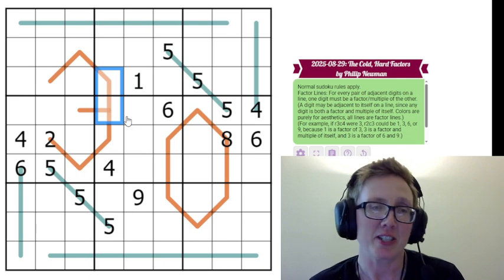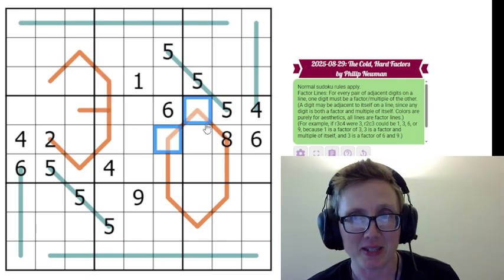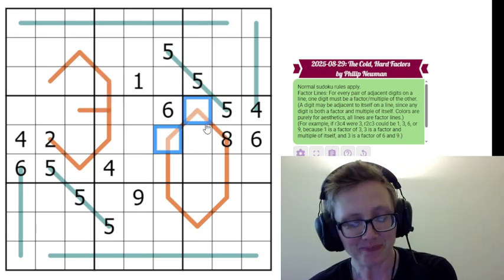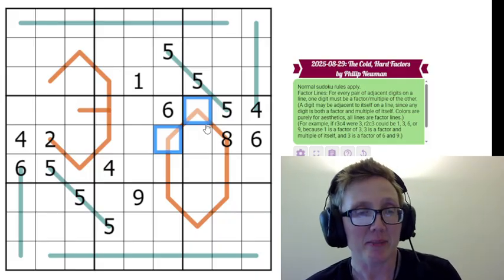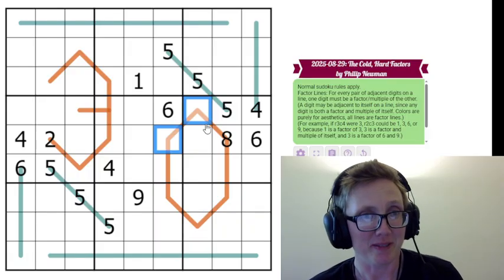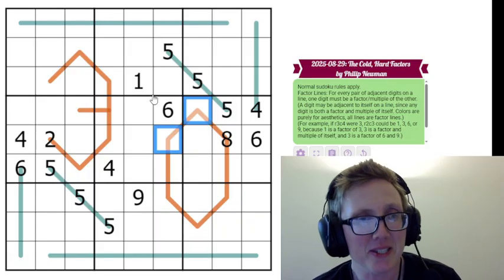They can potentially be equal, so for instance, these could both be 7s because 7 is a factor of 7. Or they could be 2 and 8 because 2 is a factor of 8. They could be 3 and 9 because 3 is a factor of 9. They could be 1 and 5 because 1 is a factor of everything.